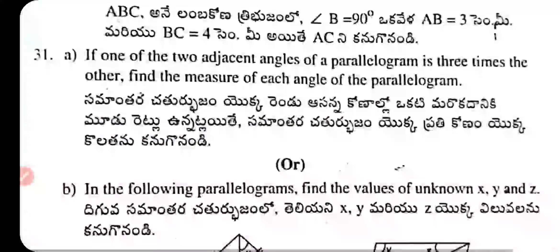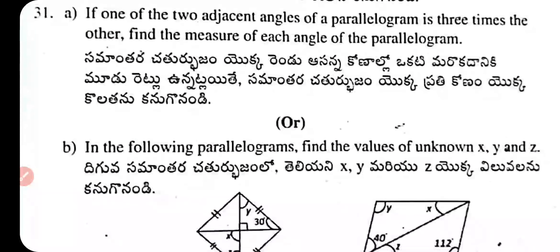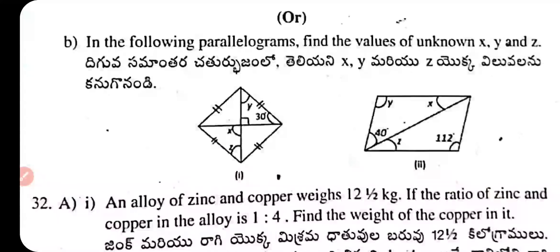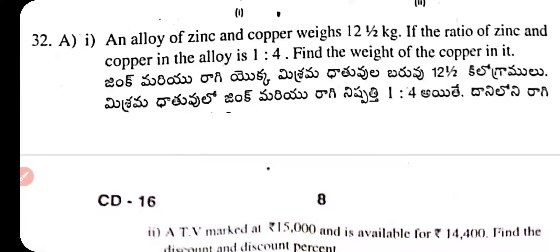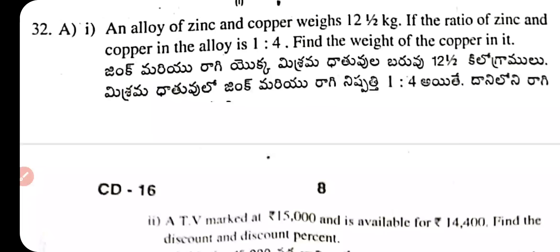Question 31A: If one of the two adjacent angles of a parallelogram is 3 times the other, find the measure of each angle of the parallelogram. Question 31B: In the following parallelogram, find the value of unknown x, y, and z.